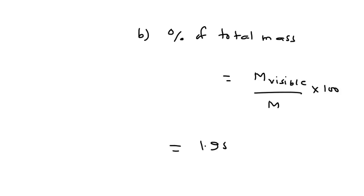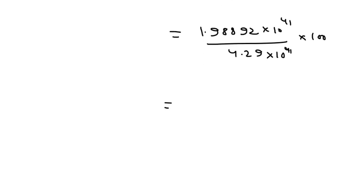The percentage of total mass, percentage of total mass is equal to M visible by M multiplication 100 which is equal to 1.98892 x 10 to the power 41 kg by 4.29 x 10 to the power 41 kg x 100 which on solving, I get the final value as 46.361% as our answer.